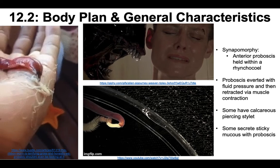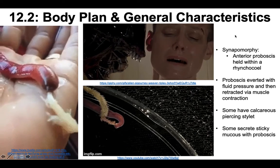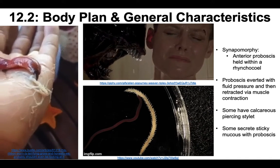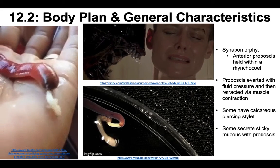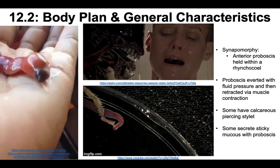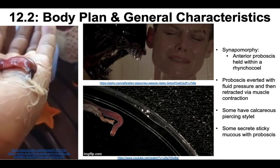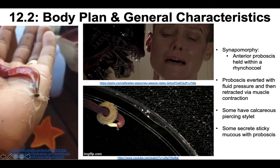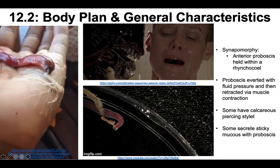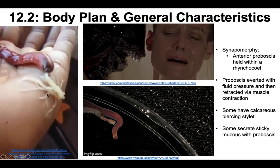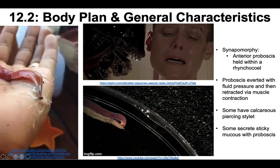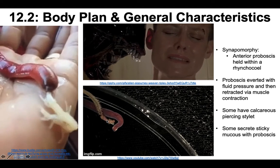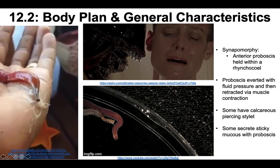Let's talk about their general body plan and characteristics. The one unifying synapomorphy I'd like you to recall for the exam is that they have an anterior proboscis held within a cavity called the rhynchocoel — a fluid-filled cavity that holds the proboscis. When I first saw videos of it everting its proboscis, like in this video, it reminded me of the monster from Alien.